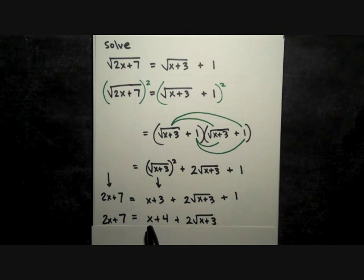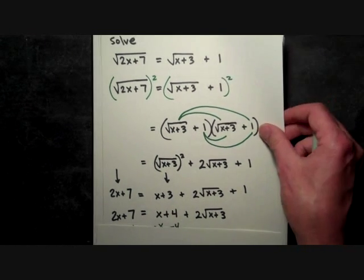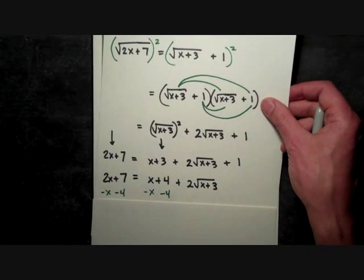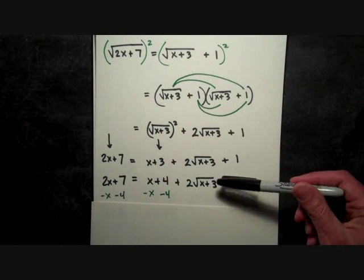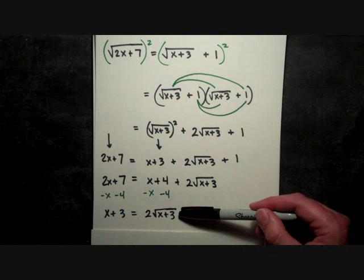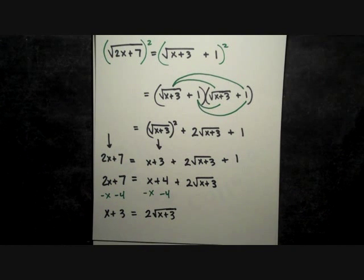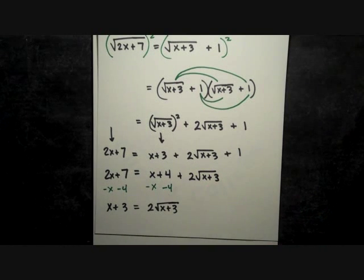And I'm now going to subtract x from both sides and subtract 4 from both sides so that I get the radical here. I still have the 2 there. But 2√(x+3) = x + 3.